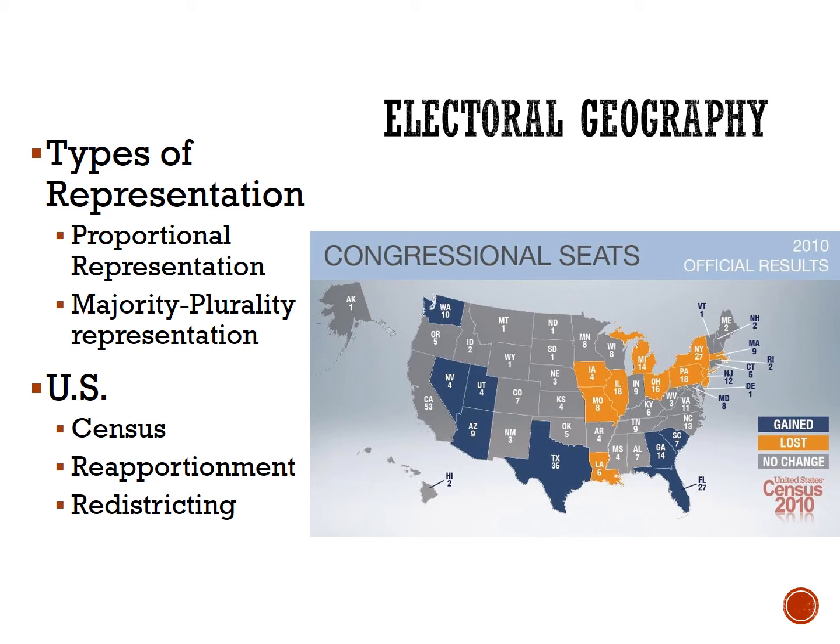After reapportionment, when states gain or lose representation, individual states go through the process of redistricting, where boundaries are drawn for congressional districts to reflect the population changes since the previous census. Districts are redrawn every 10 years, and redistricting takes place at the state level. This is a great example of the federal system at work, as each state gets to decide how and who gets to redraw those district lines. While representatives will represent a local community, they vote on policies at the national level, and when states gain or lose representation, that affects the state as a whole.